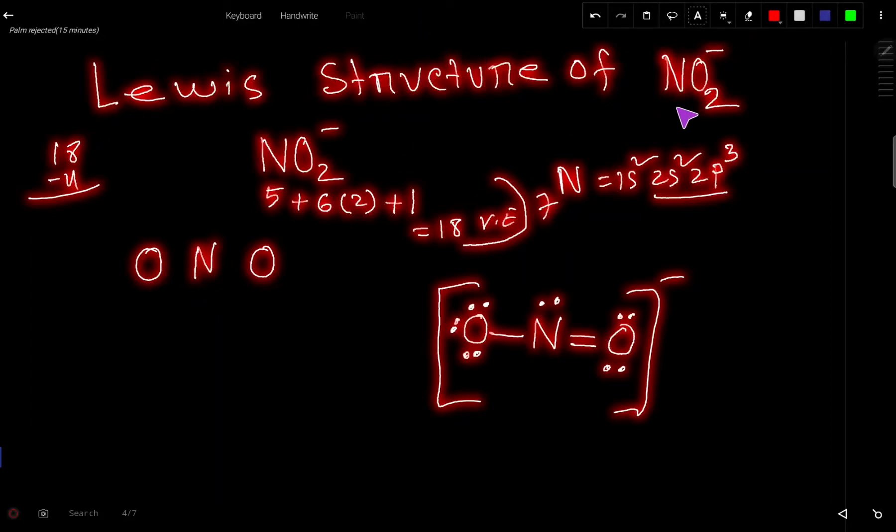Lewis structure of NO2- nitrate ion. First, we have to count the valence electrons for this nitrate ion. Nitrate ion has 18 valence electrons total.